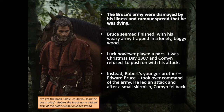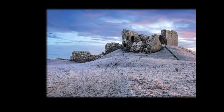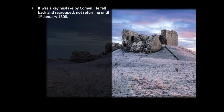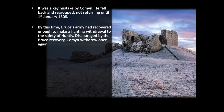Instead, Robert's younger brother Edward Bruce took over command of the army from his sick brother and led a counterattack. Bruce's army issued out from the forest on Christmas Day and after a small skirmish, the Comyn army fell back — they weren't willing to fight on Christmas. Comyn fell back and regrouped, not returning until the 1st of January 1308. By this time, Bruce's army had recovered enough to make a fighting withdrawal to the safety of Huntly, managing to fend off the Comyn forces and withdraw to a safer stronghold. Discouraged by Bruce's recovery, Comyn withdrew once again, blowing his big chance to crush Bruce's army.